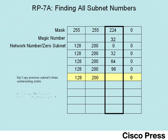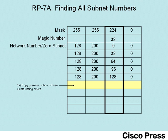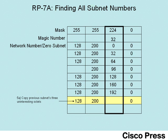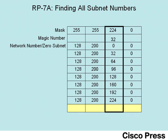Going through the rest of these subnets briefly: for the next subnet, adding 32 to 96 gives a third octet of 128. For the next subnet, the third octet is 128 plus 32, or 160. For the next subnet, the third octet is 160 plus 32, or 192. And for the next subnet, the third octet is 192 plus 32, which is 224.